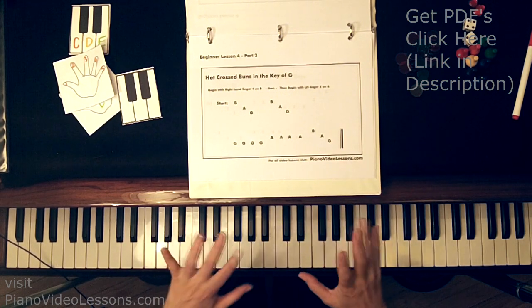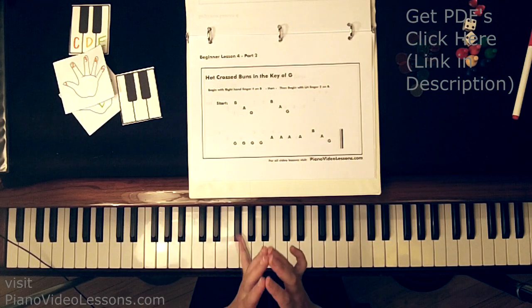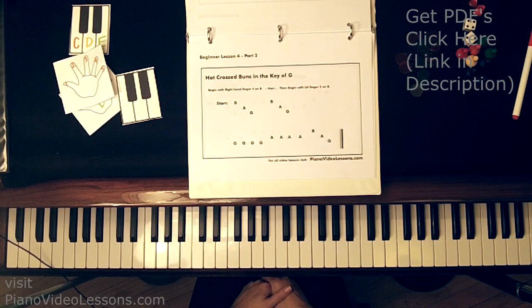So we're going to continue using the same fingers, 4, 3, and 2 in left hand and right hand, to play hot cross buns again in the key of G.